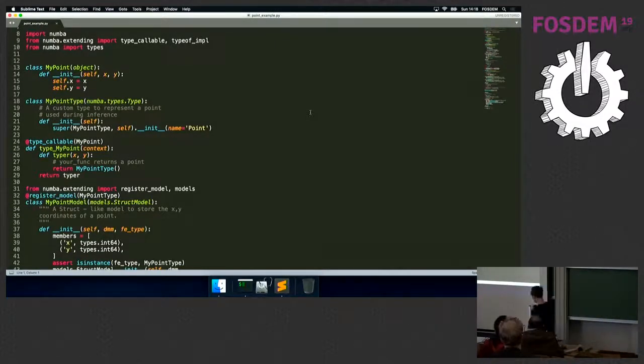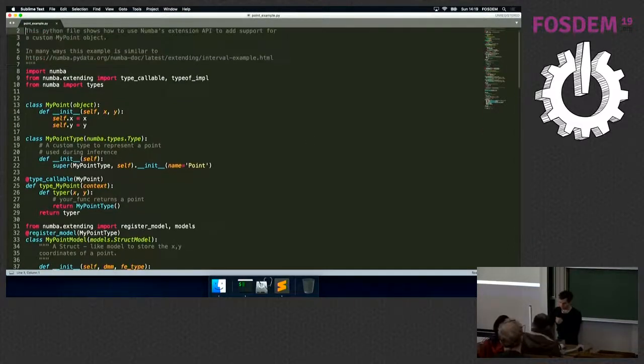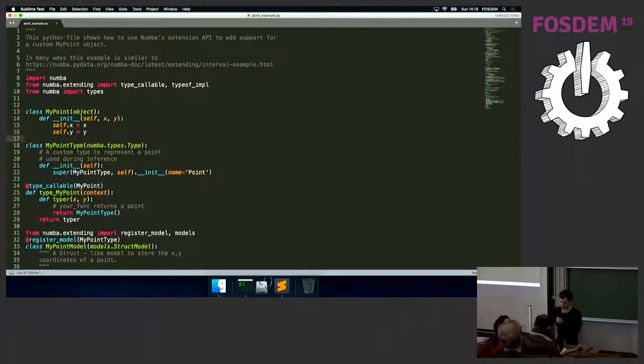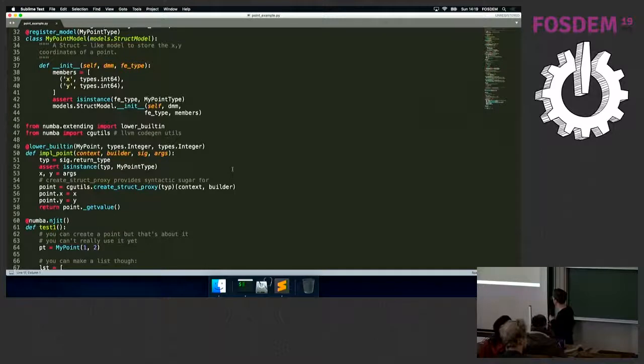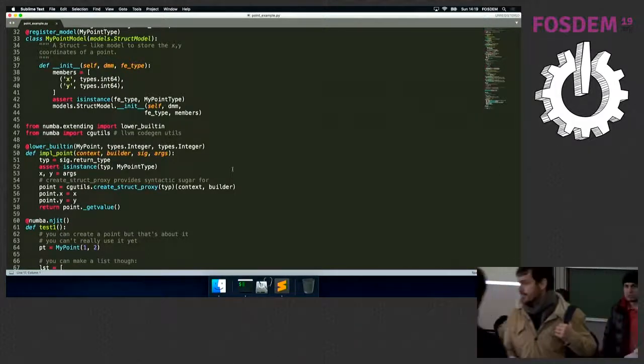This is an example of the point example that I also explained during the presentation. We have here our MyPoint constructor, with X and Y, which are supposed to be an integer. And here we have the Numba type that corresponds with the MyPoint constructor. This is a typer I was talking about.